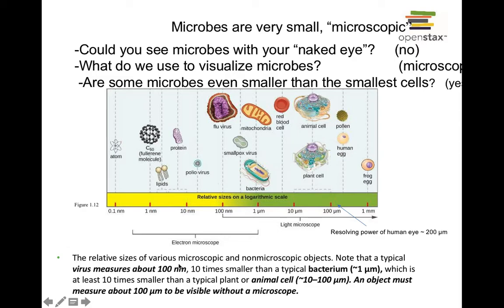Just some cool information: relative sizes of various microscopic and non-microscopic objects. A typical virus measures about 100 nanometers, 10 times smaller than a typical bacterium. A typical bacterium is at least 10 times smaller than a typical plant or animal cell. An object must measure 100 to 200 micrometers to be visible without a microscope. This is why it took many years to make advances in microbiology — it took a long time to invent the microscopes we could use to visualize them.